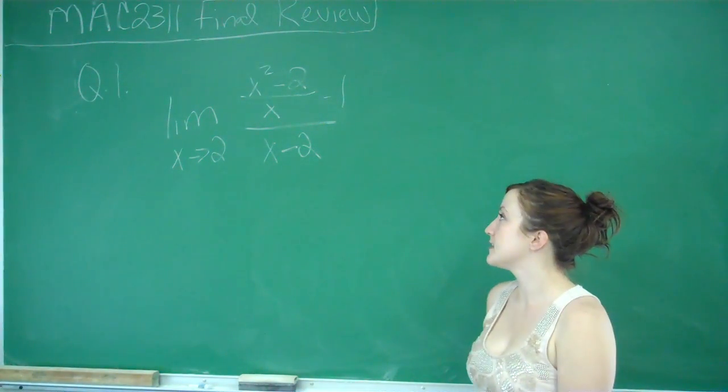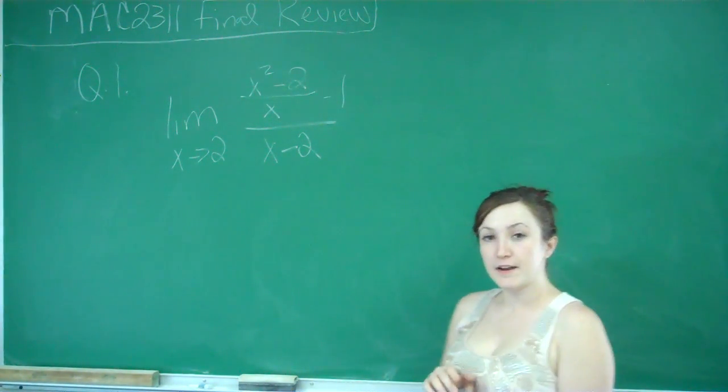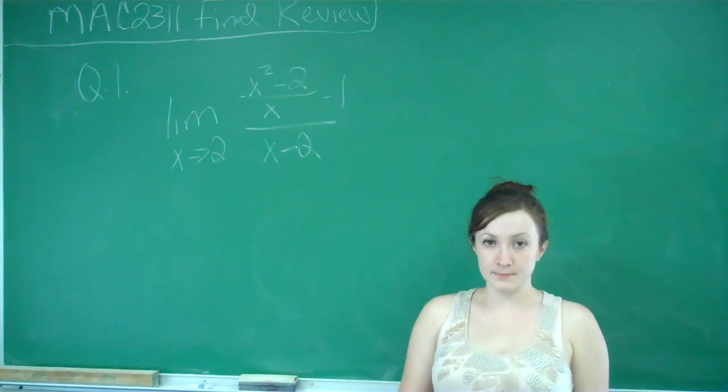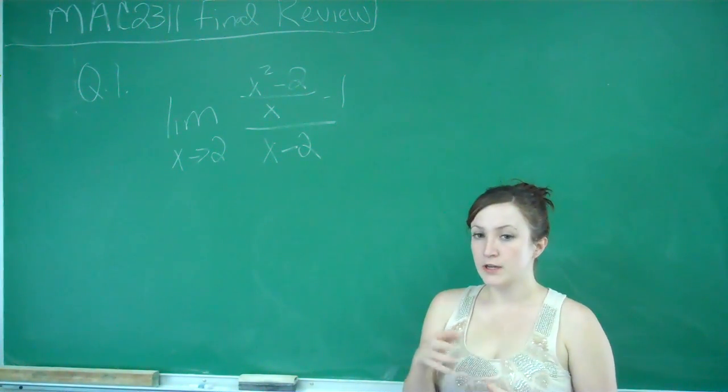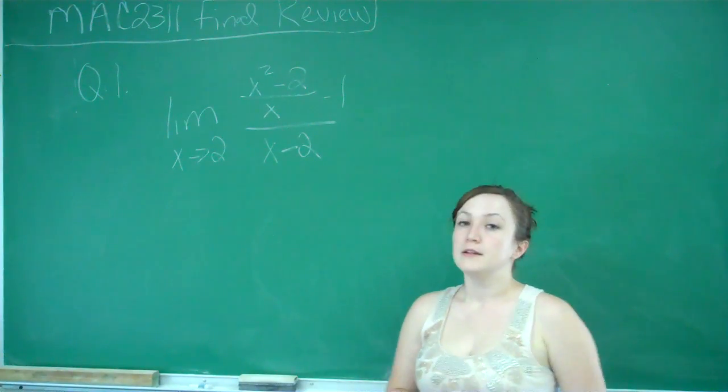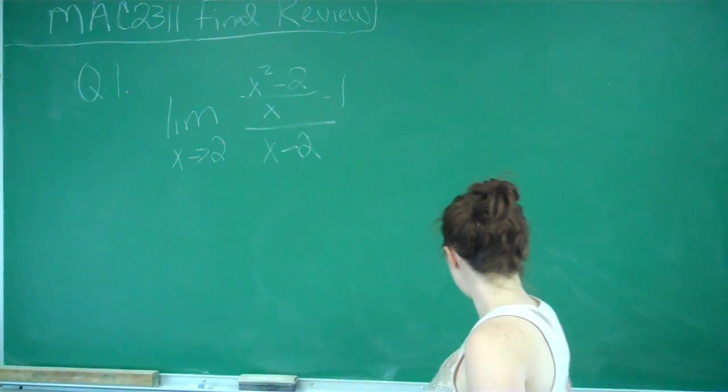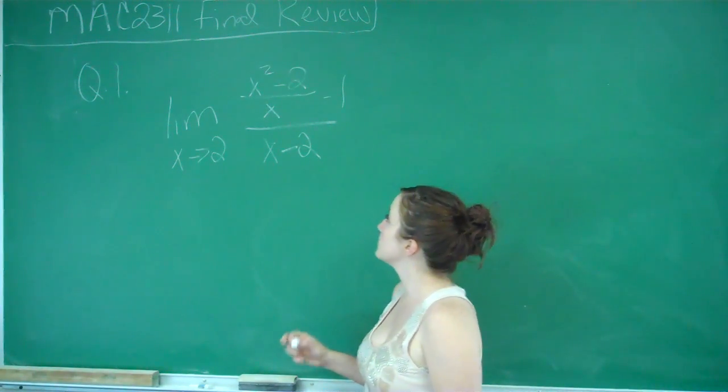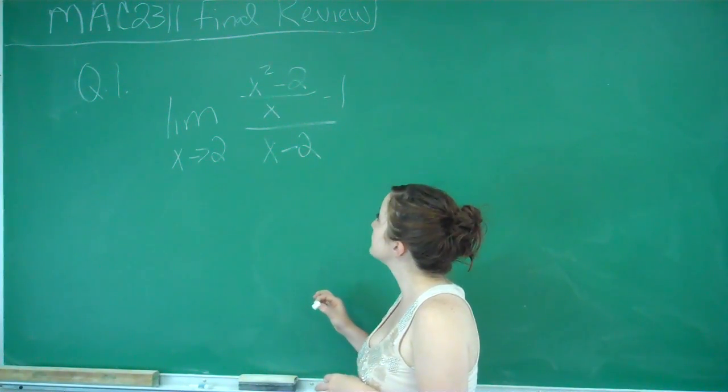Hello, my name is Ashley, and this is the MAC 2311 Final Review. We're going to be doing an old exam that your teacher made available to you. So question 1 asks us to find the limit as x approaches 2 of x squared minus 2 over x minus 1.